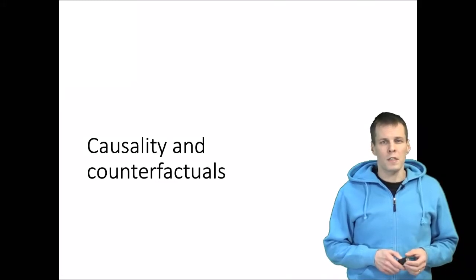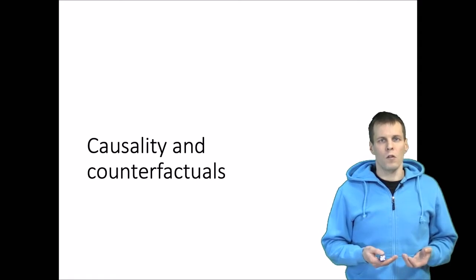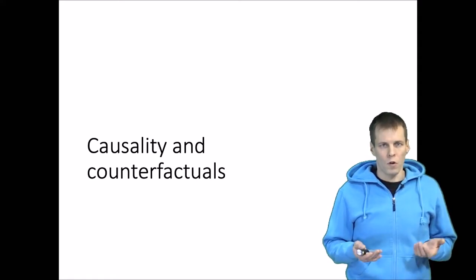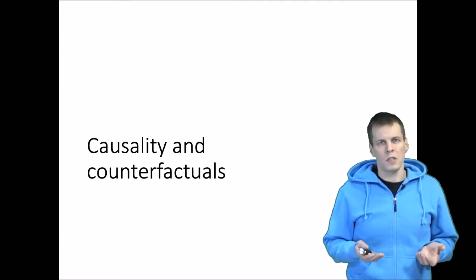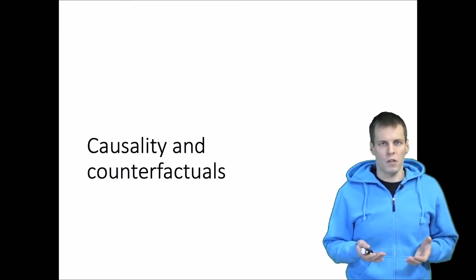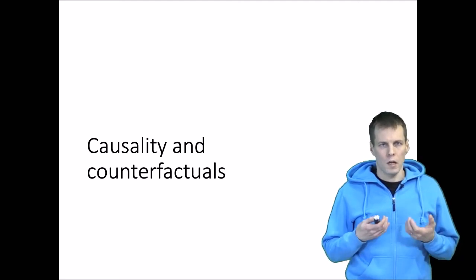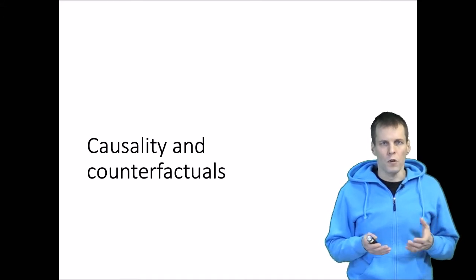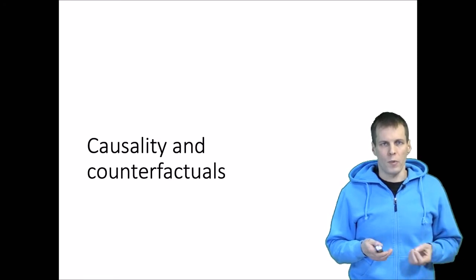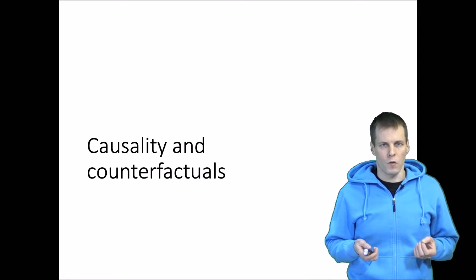Researchers in social sciences typically do empirical studies to make, support, or refute causal claims. While running a regression analysis does not require that you understand much about causality, understanding what our causal claims are actually about is very useful in the long run because it allows you to evaluate when a particular research design or statistical analysis technique can provide valid evidence for causality.